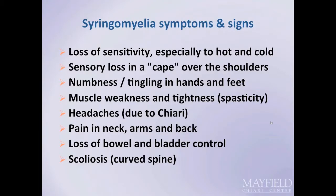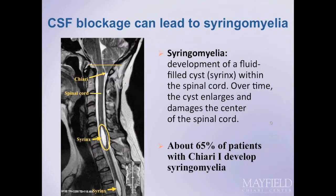In some patients, CSF flow obstruction can lead to the development of a syrinx, which is a more serious finding as permanent damage can occur to the spinal cord if left untreated. This condition is known as syringomyelia. In some cases, permanent damage has already occurred by the time surgery is recommended. In these cases, the purpose of surgery is to halt progression of the disease and hopefully reverse the effects on the spinal cord, though improvement varies from patient to patient.